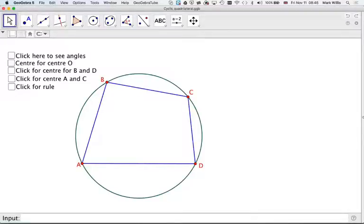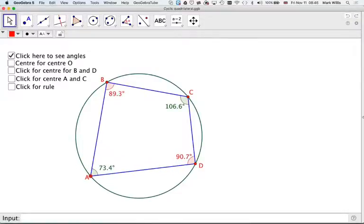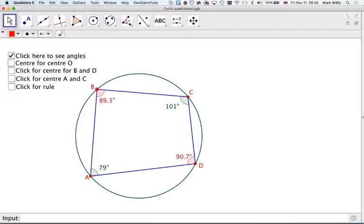A quadrilateral where the four vertices touch the circumference of the circle is called a cyclic quadrilateral. Now, if you click here and you look at the angles, and we can move these around a little bit if you want, what do you notice?